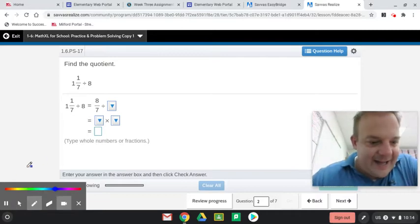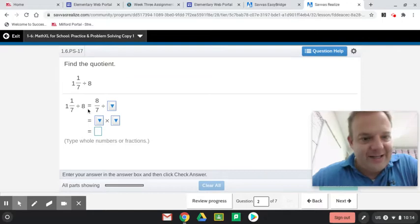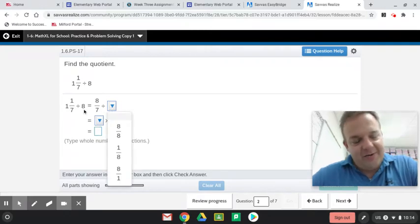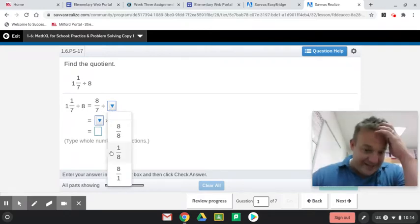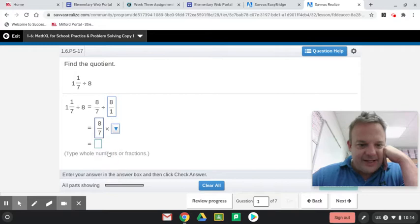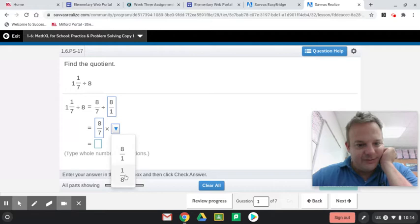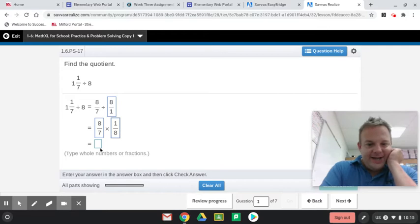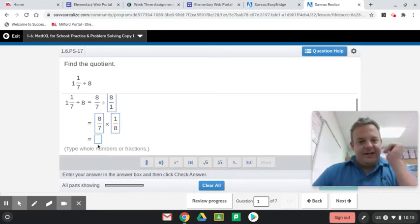So 1 and 1 seventh divided by 8. 7 times 1 plus 1 is 8 sevenths. So that's what they did there, they converted it to an improper fraction. And then they want you to know that 8 as a whole number is 8 over 1. And now, left side leave it, middle multiply, right side reciprocate. So the 8 over 1 becomes 1 over 8. And now, 8 times 1 is 8, 7 times 8 is 56.